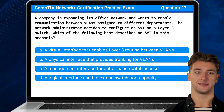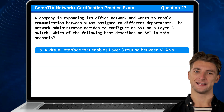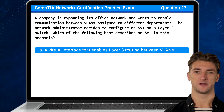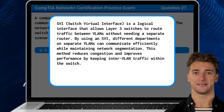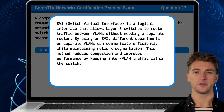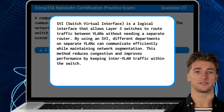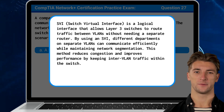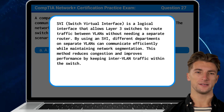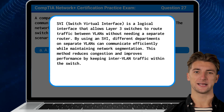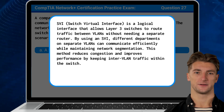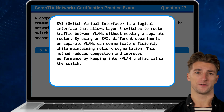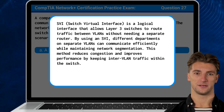The answer is A: a virtual interface that enables Layer 3 routing between VLANs. An SVI, or Switch Virtual Interface, is a logical interface that allows Layer 3 switches to route traffic between VLANs without needing a separate router. By using an SVI, different departments on separate VLANs can communicate efficiently while maintaining network segmentation. This method reduces congestion and improves performance by keeping inter-VLAN traffic within the switch.